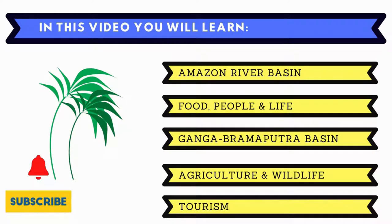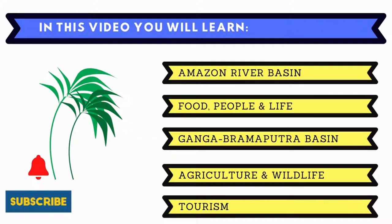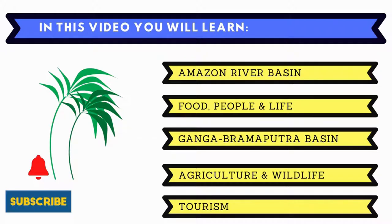Hello everyone, today we are going to cover the eighth unit of Society Geography Class 7. We are going to study about the environmental conditions of two different river basins and analyze their similarities. So let's get started.